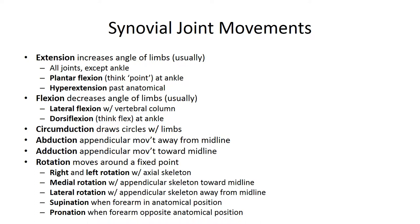Flexion is the opposite of extension, decreasing the angle between the articulating elements, like lifting a dumbbell in a biceps curl. Subcategories include lateral flexion and dorsiflexion. Dorsiflexion is flexion at the ankle joint with elevation of the sole, like when you dig in your heel. Circumduction is where you move a limb in a circle, creating a cone in space. Abduction is an angular movement within the lateral-medial plane that moves the body part away from the longitudinal axis, like the first part of a jumping jack.